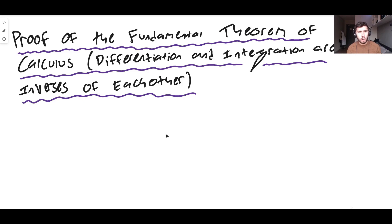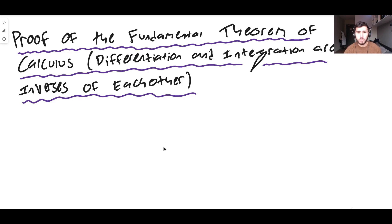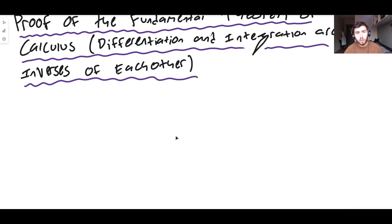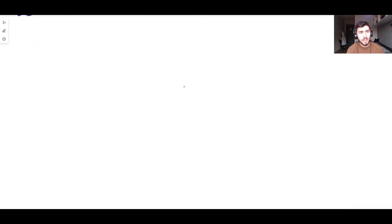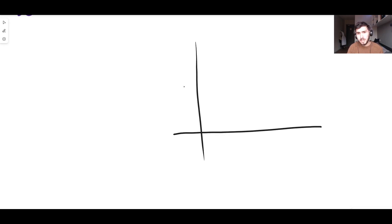But how do you actually show it? We're basically saying: why is the gradient function of a line, when you integrate it, going to give you the original function back? Why is the area function, when you differentiate it, going to give you the original function back? And why are differentiation and integration related? Well, we can actually show that using a little bit of geometry. There are plenty of ways to prove the Fundamental Theorem of Calculus, but what we're going to do is the easiest possible way to prove it.